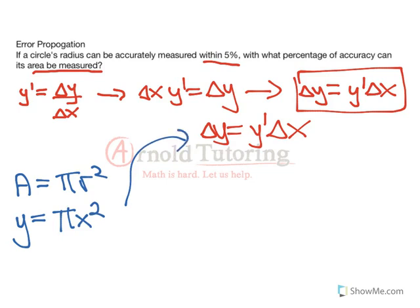So we've got what y equals. We can see there's a y prime in here, so I'm also going to differentiate this. And the two comes down, pi x. Great. So we've got what y equals, we've got what y prime equals.